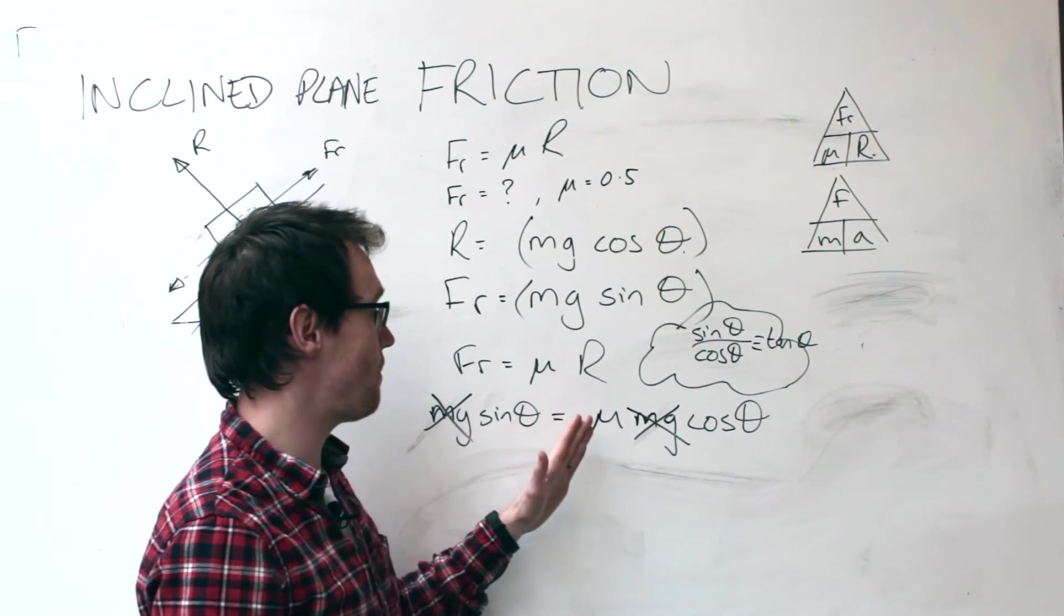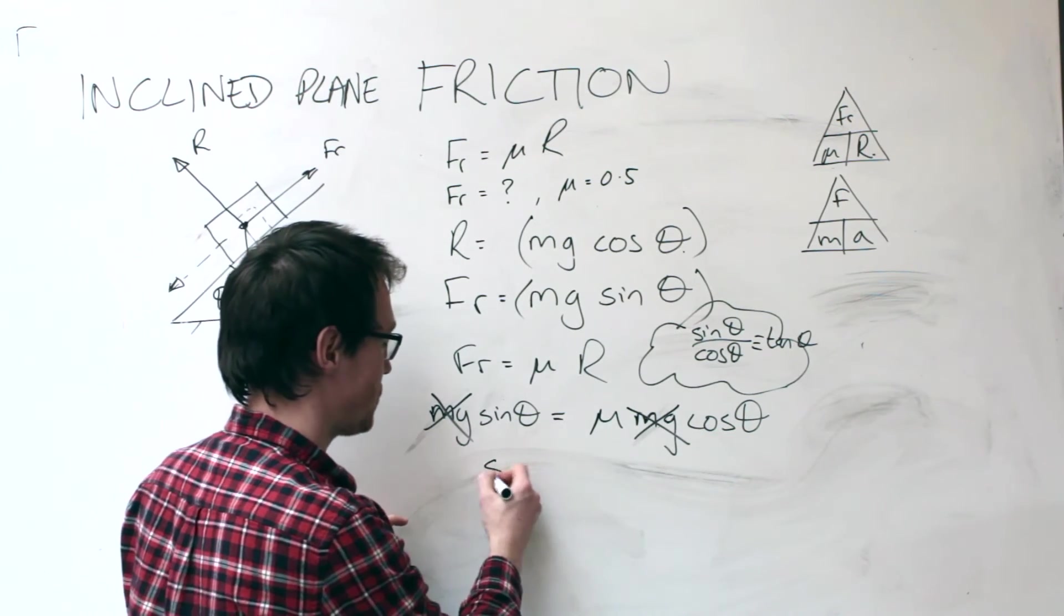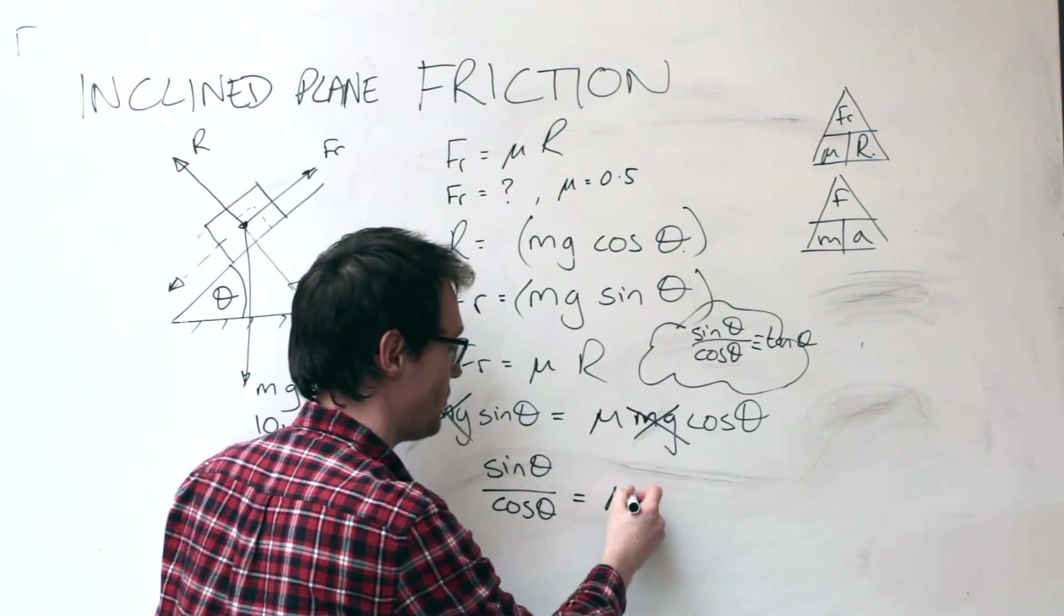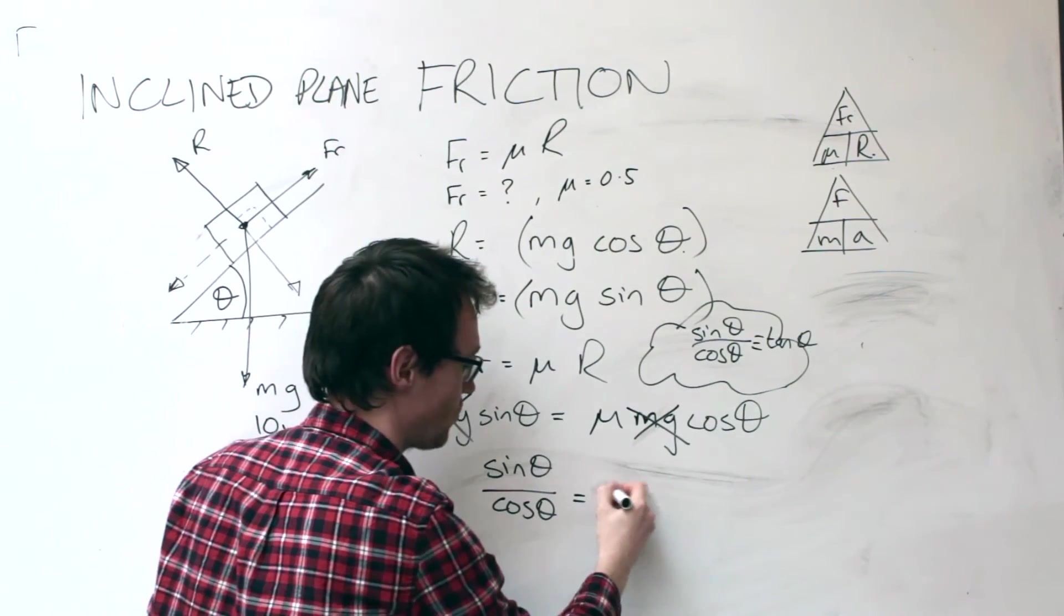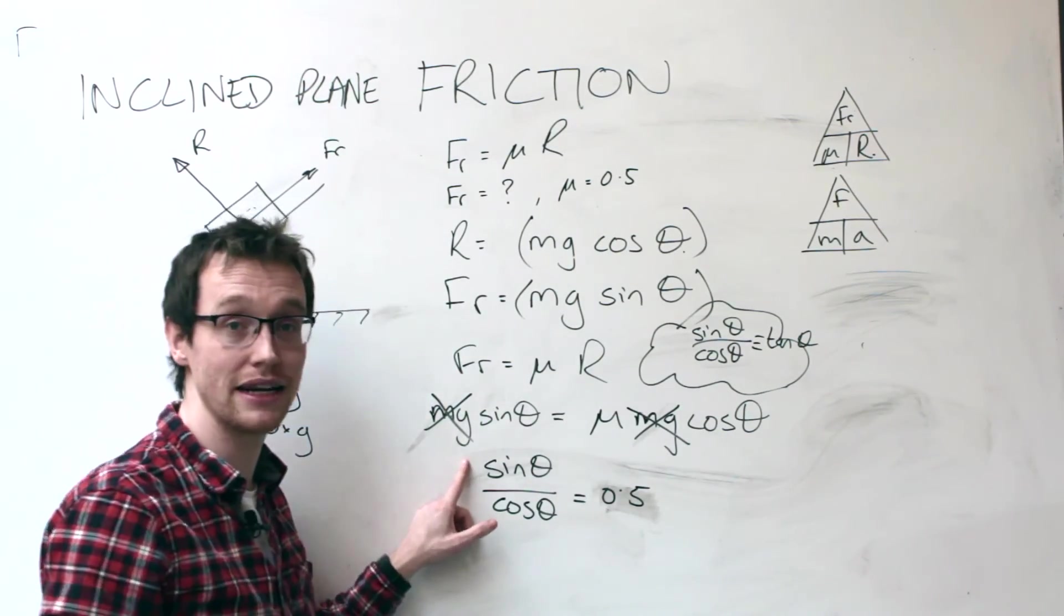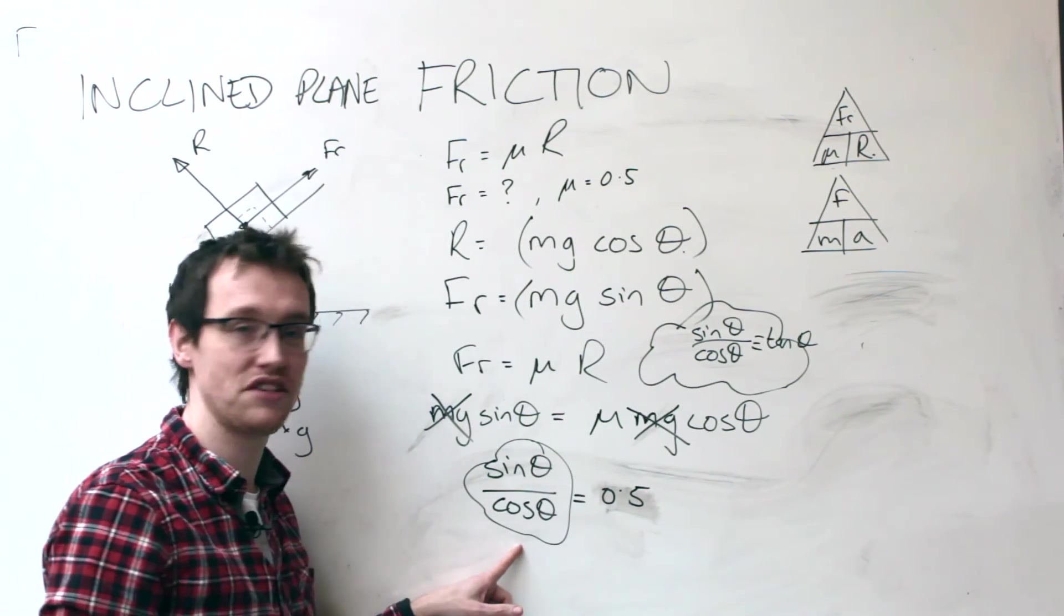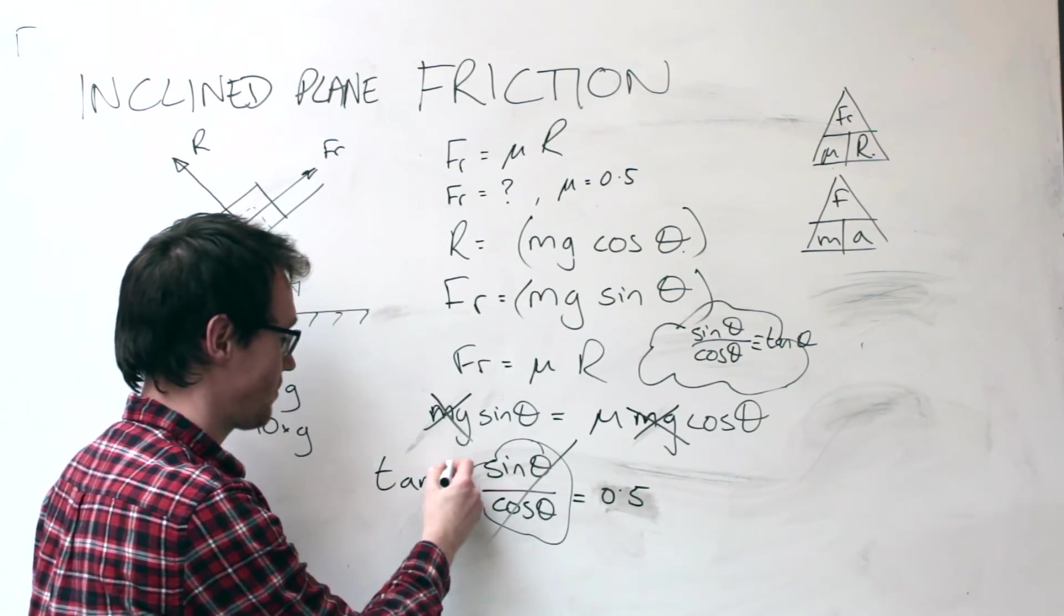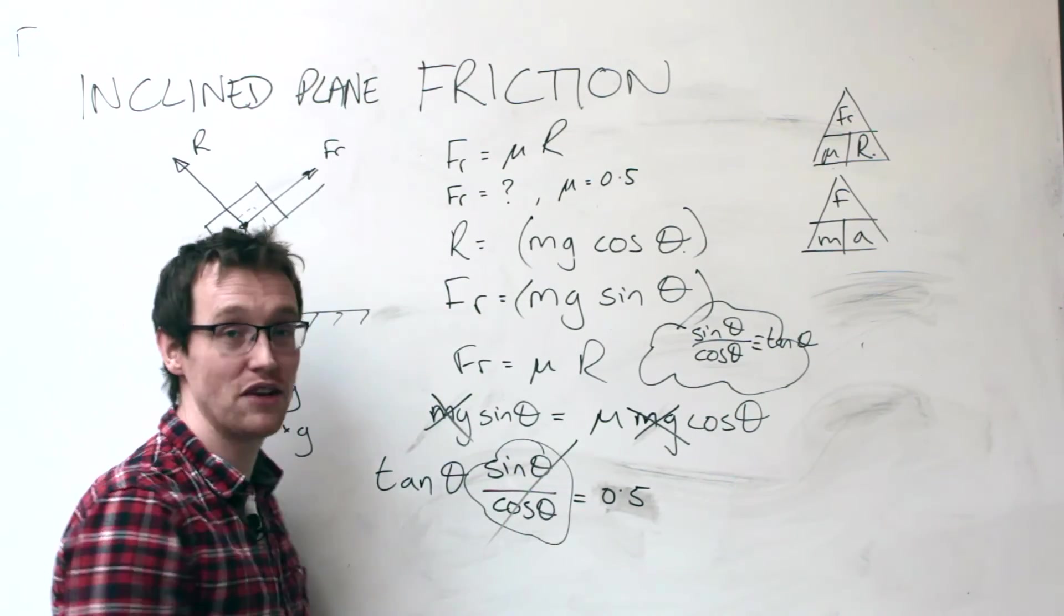So I'm going to get mu on its own so I'm going to make a trig identity here. I'm going to go sin theta over cos theta equals mu, and we know that mu is given in the question as 0.5. So how does this help us? Well it turns out there is a trig identity which means that wherever you see sin theta over cos theta, you can replace that by tan theta. So tan theta equals 0.5.